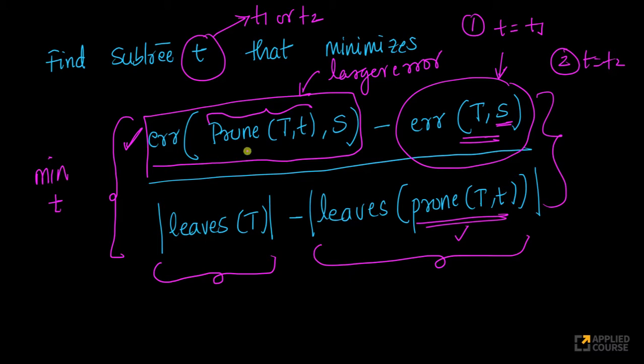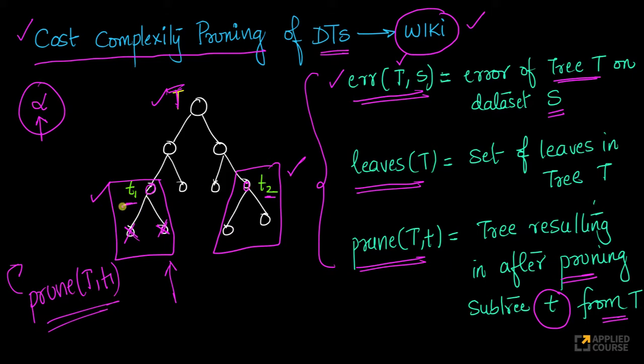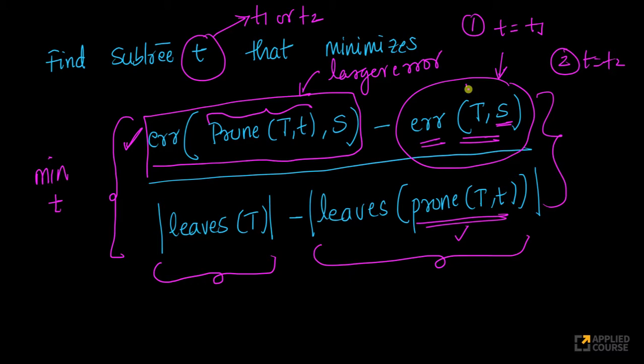Look at this, because you're minimizing this difference here. You're minimizing this difference. That means, you're trying to find between this t1 and t2, you're trying to find that tree to prune whose error is as close as possible to the original fully grown tree, while you're trying to somehow minimize the number of leaves that you have.